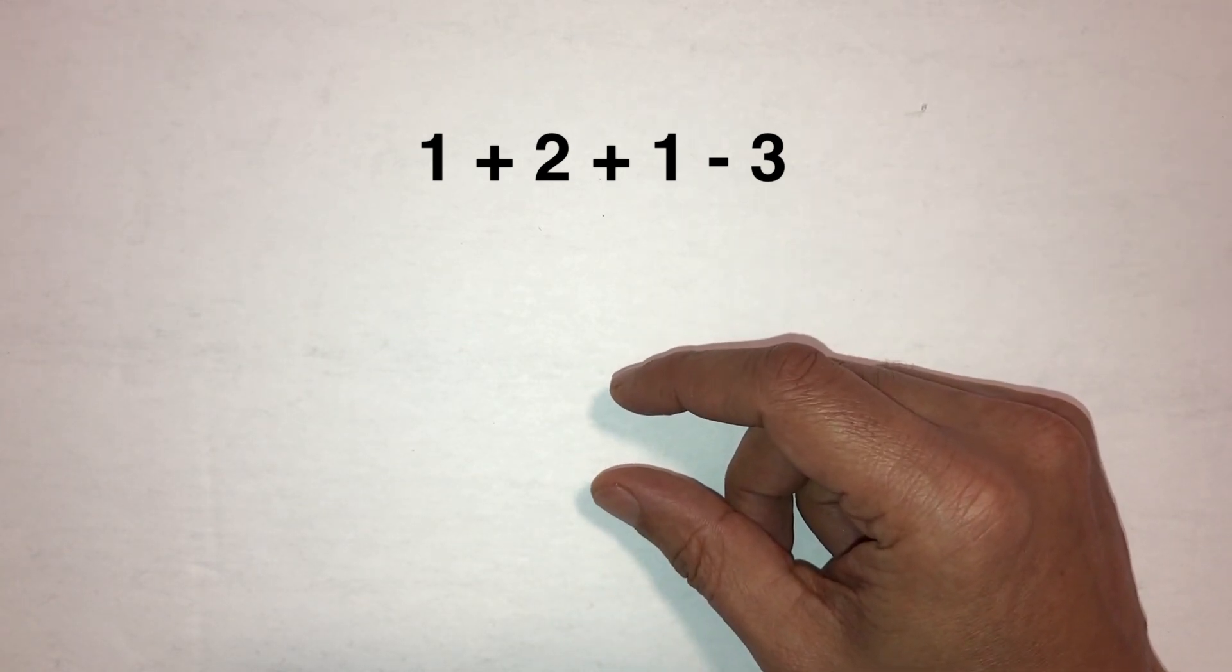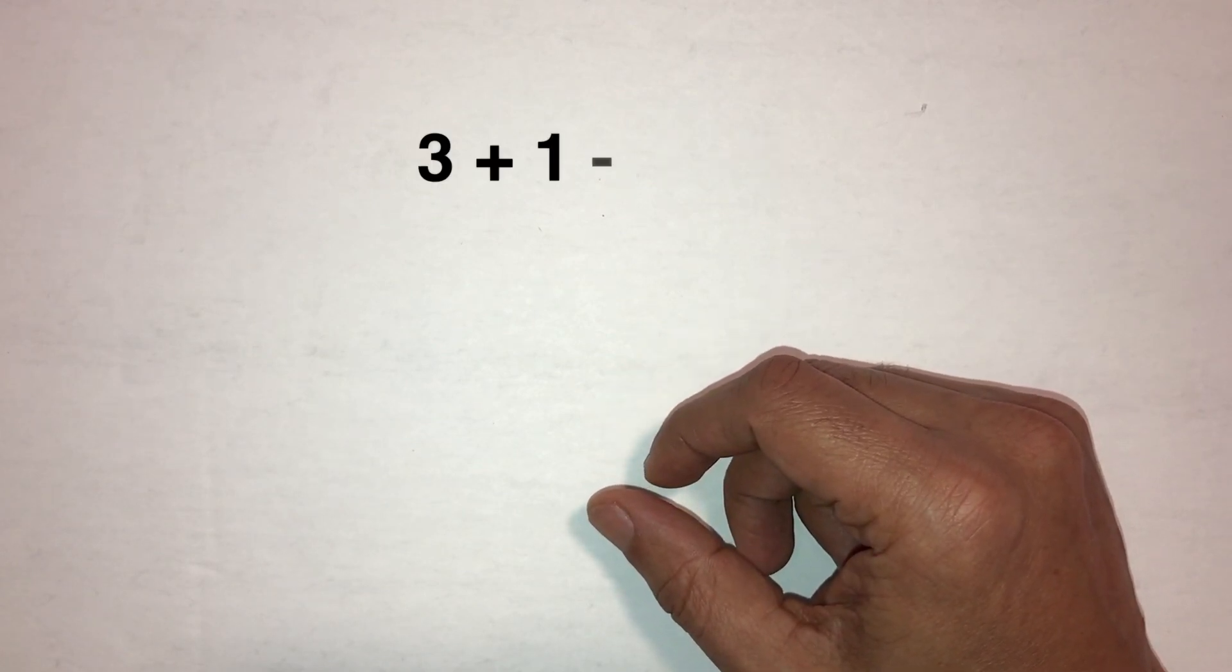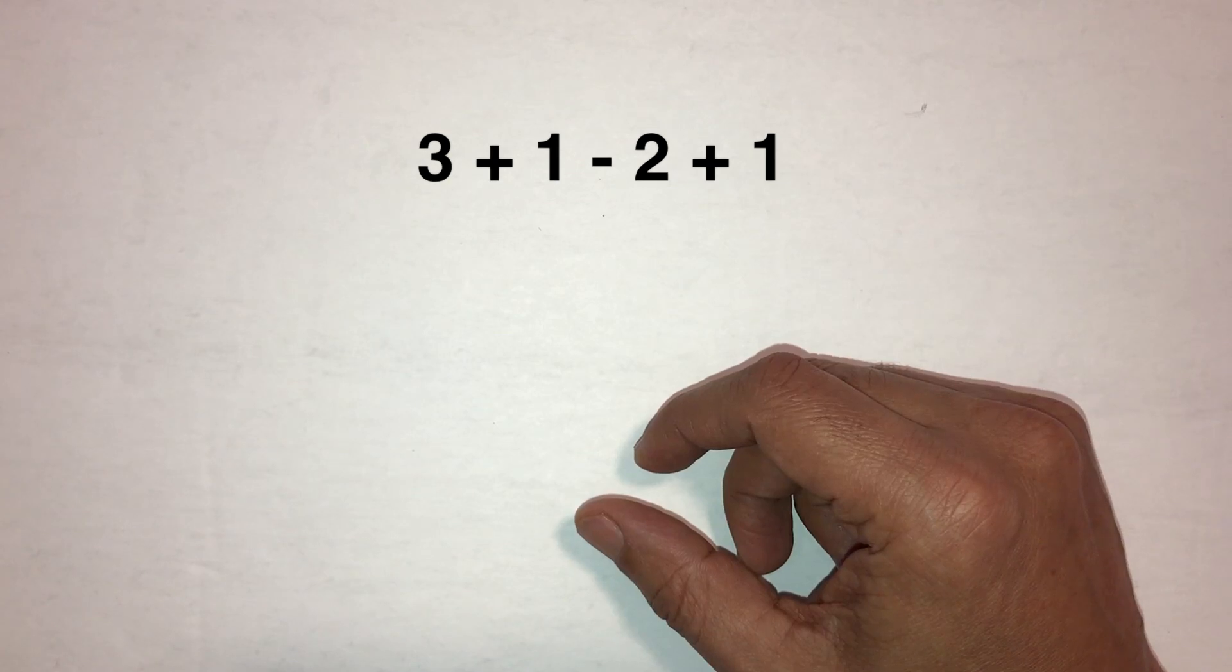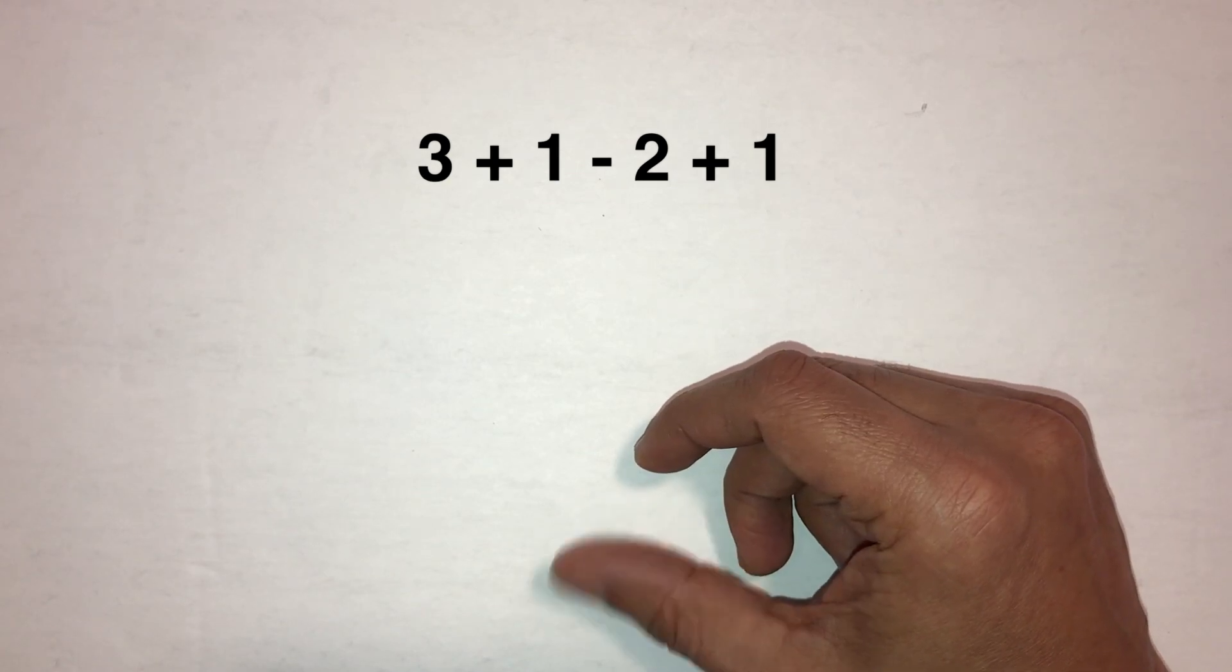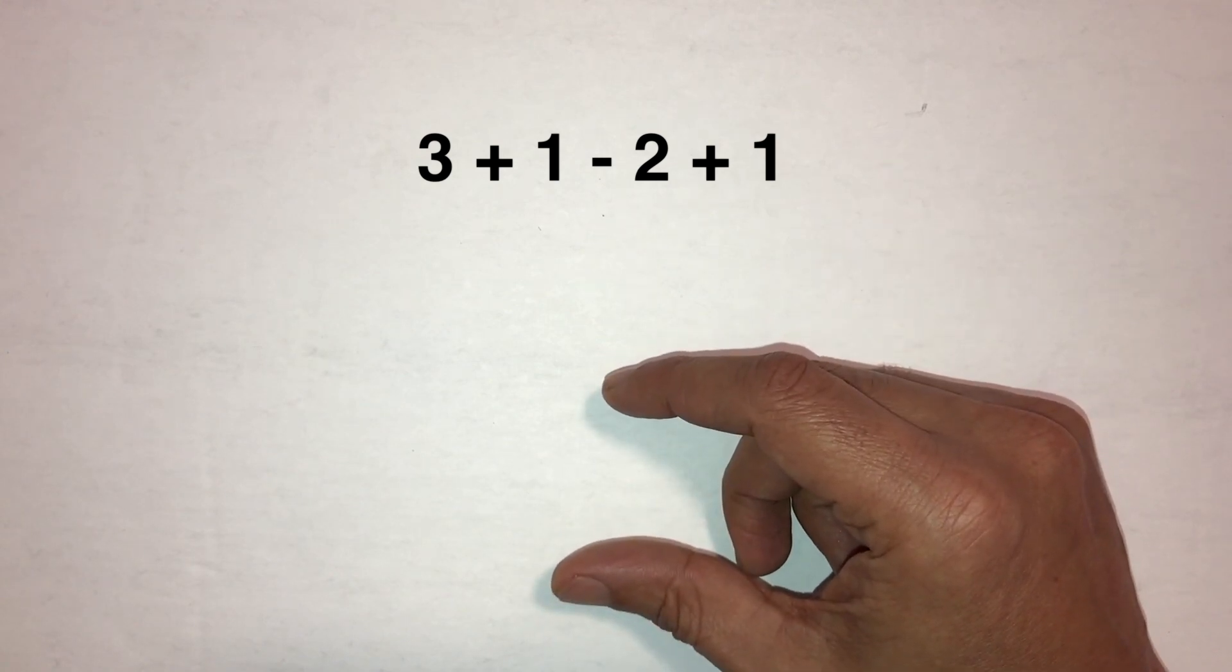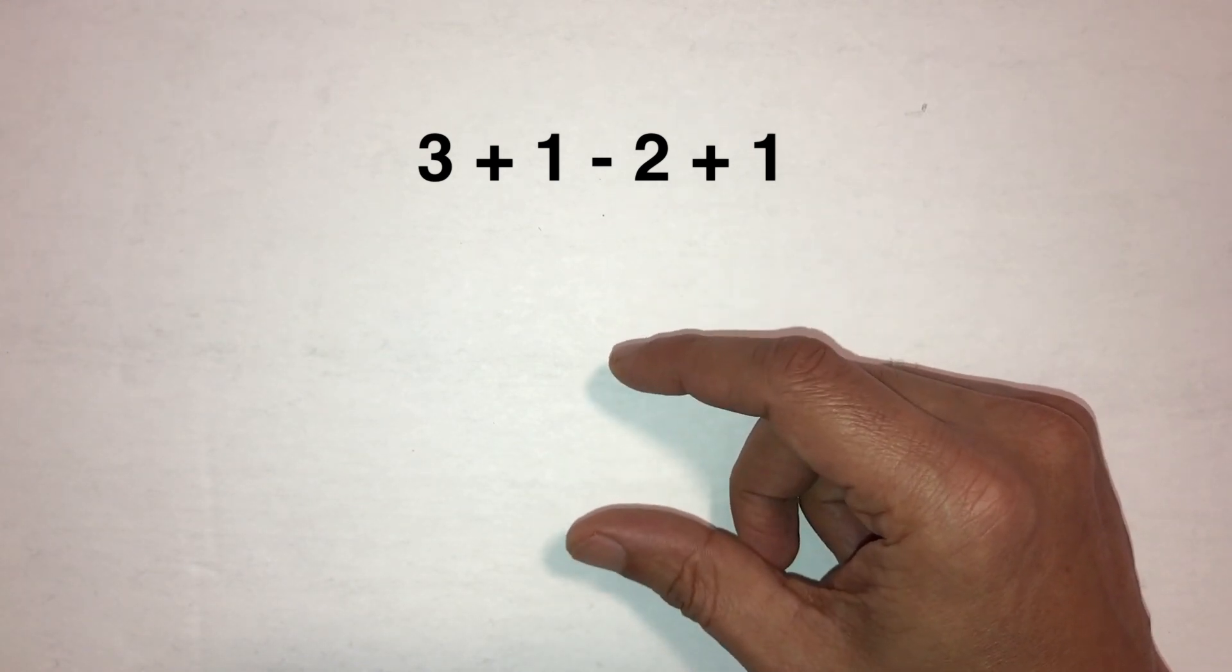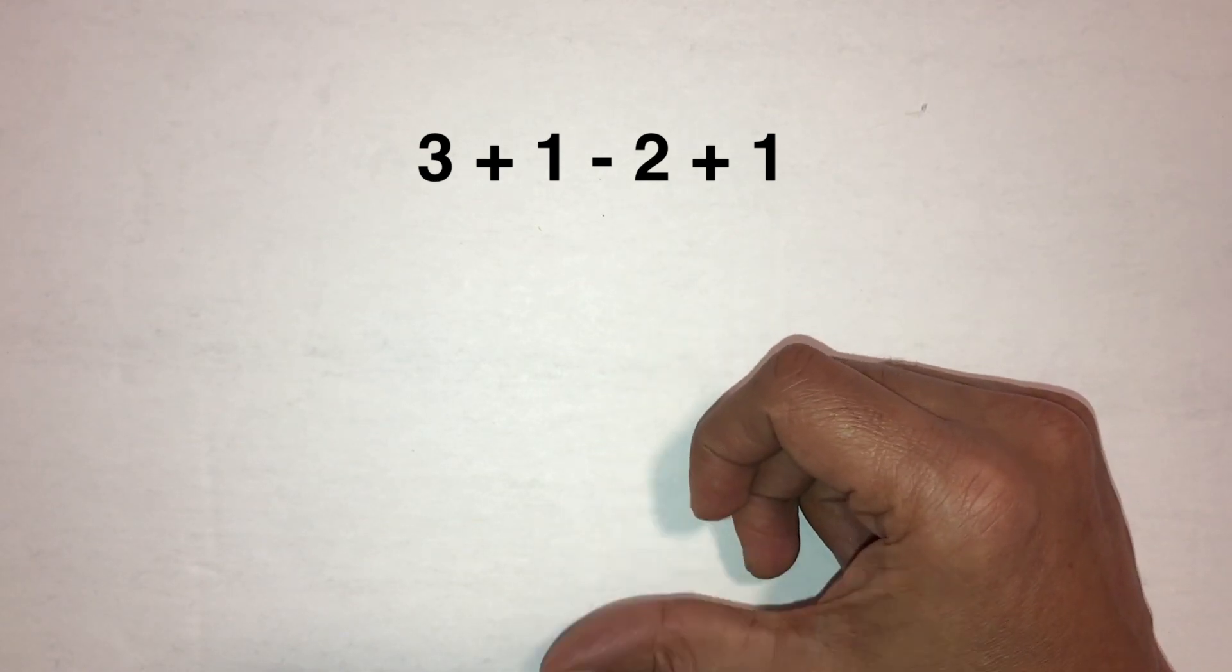Let's do another one. Let's do 3 plus 1 minus 2 plus 1. So here we go: 3 plus 1, we see a 4 touching the answer bar. Take away the 2, we've got a 2 left. Add a 1, 3. Okay, we do that again. 3 plus 1 minus 2 plus 1, answer is 3.